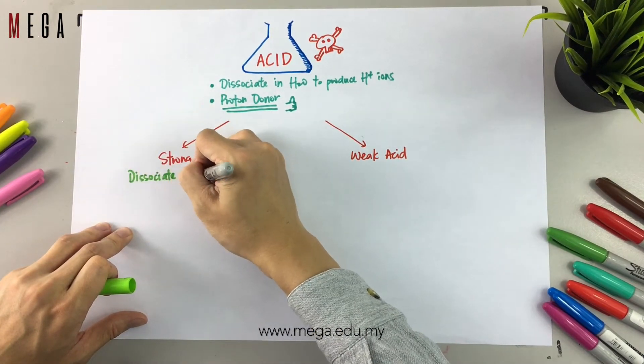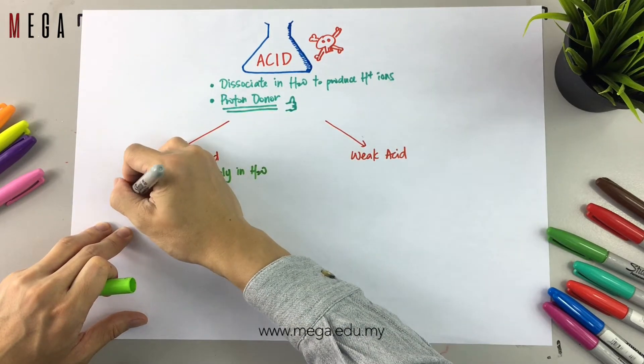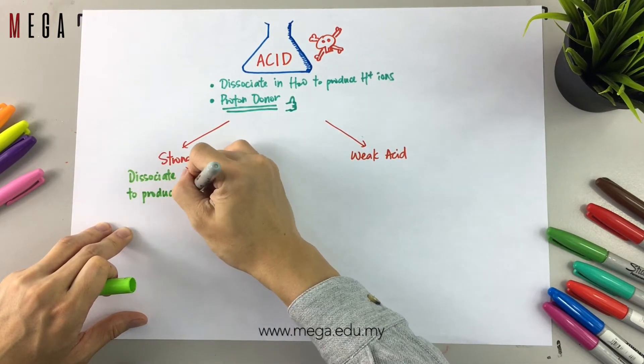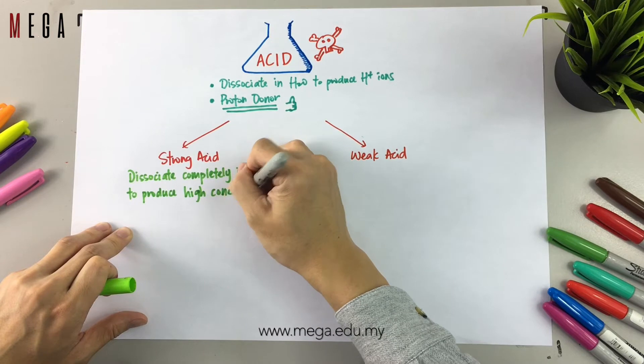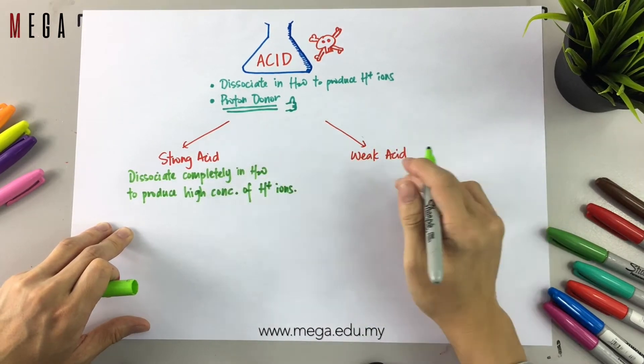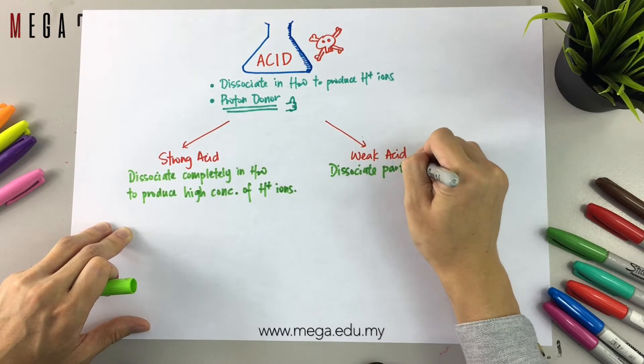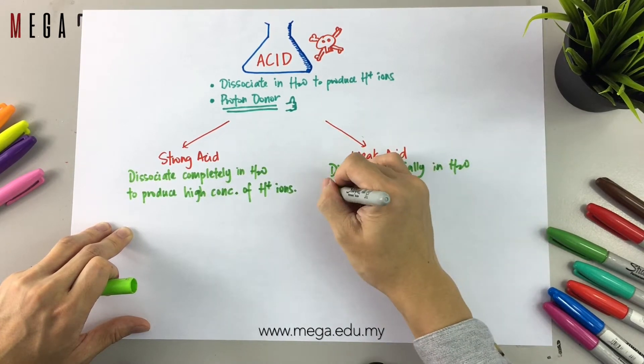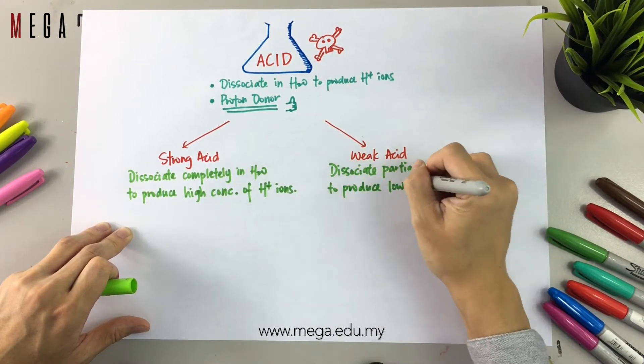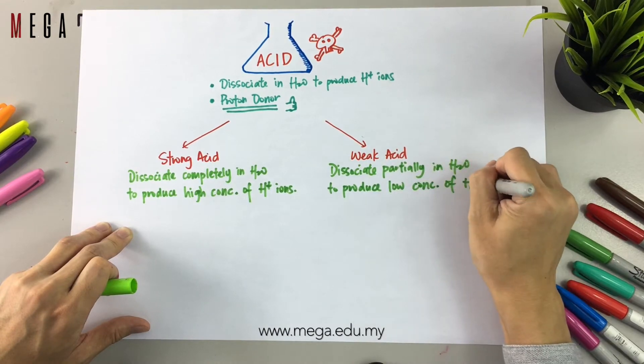For strong acid, it dissociates completely in water to produce high concentration of hydrogen ions, whereas for weak acid, it dissociates partially in water to produce low concentration of hydrogen ions.